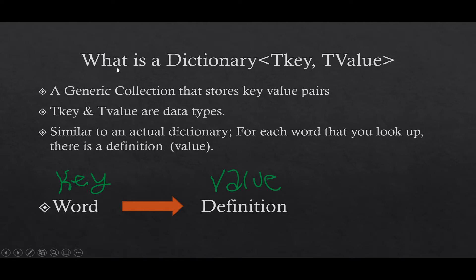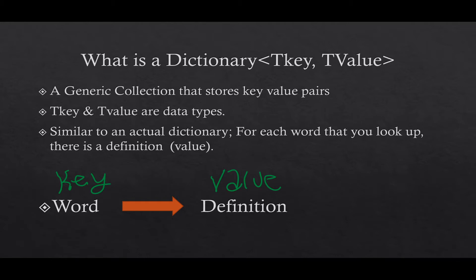We've got a key and a value. You can think of a dictionary as an actual dictionary. When you want to find the definition of a word, you need to have the word itself. Let's say we want to look for what a car is — car is the key, and we want to find the value for that key, which is the definition. In order to get the value, we must first have the key. We can't get the value if we don't have the key.